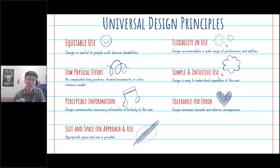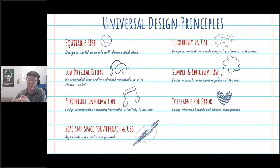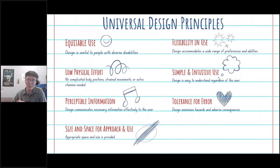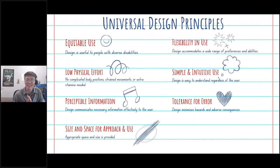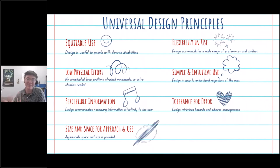Perceptible information means the design communicates necessary information effectively to the user. This is very important for things like signage. Does the sign tell the patron what they need to know, and does it do so accurately? A sign that says 'this is the library' but is placed in a building across campus isn't very effective. Make sure the information is communicated accurately — that sign should be placed inside the library itself.